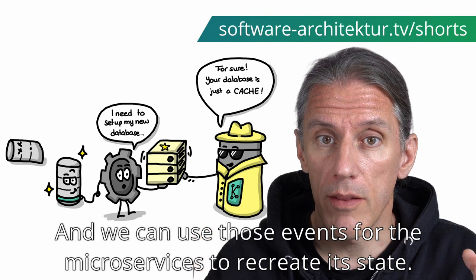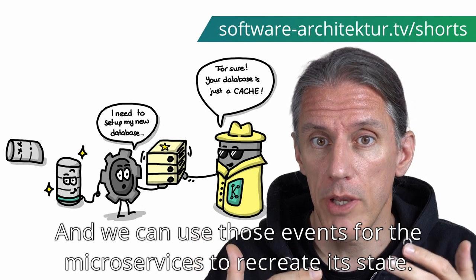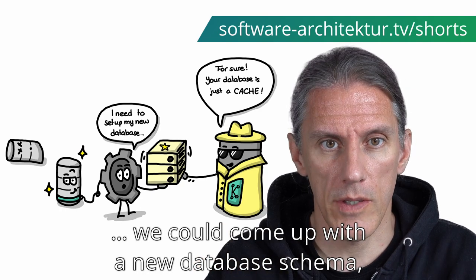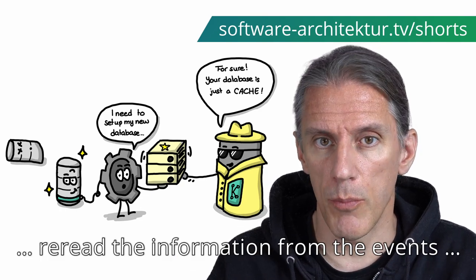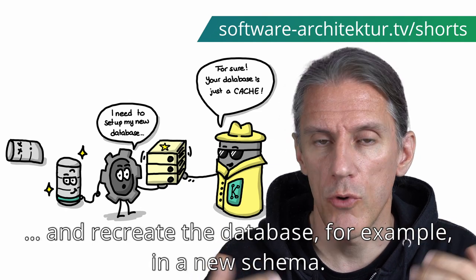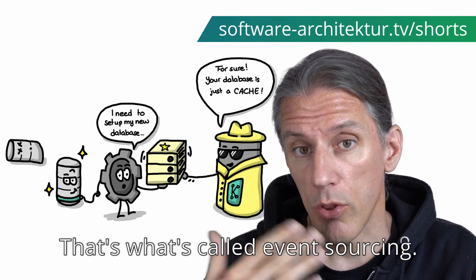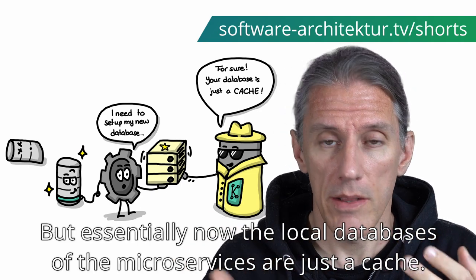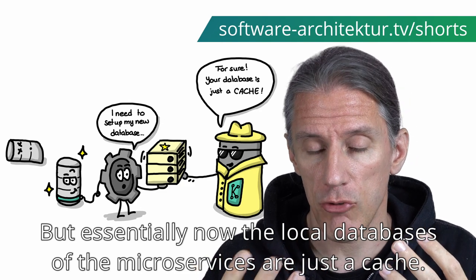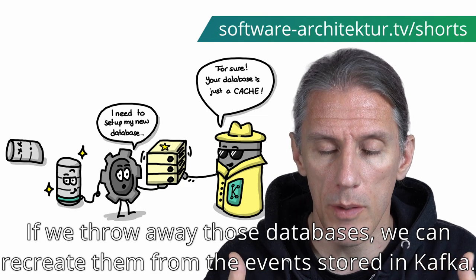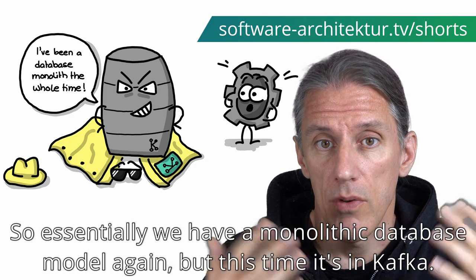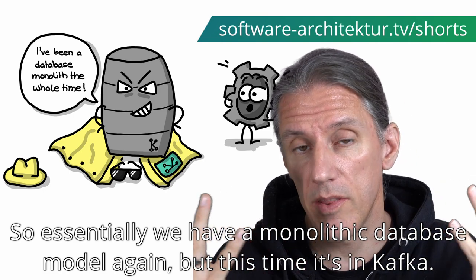And we can use those events for the microservices to recreate their state. So we could throw away the state, come up with a new database schema, reread the information from the events, and recreate the database in the new schema. That's what's called event sourcing. But essentially now the local databases of the microservices are just a cache — if we throw away those databases, we can recreate them from the events stored in Kafka. So essentially we have a monolithic database model again, but this time it's in Kafka.